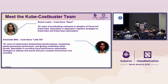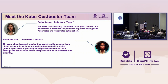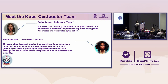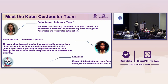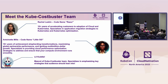Meet the KubeCostBuster team. I'm Rachel Leakin, codenamed Razor because I cut through those costs. And I'm Antoinette, codenamed Little Gigi — it means little go-getter. By the end of this presentation, you will definitely know I earned that name. And meet our mascot, Little Cuddy. If you see Little Cuddy on the slide, that means we want you to pay special attention to that particular information.